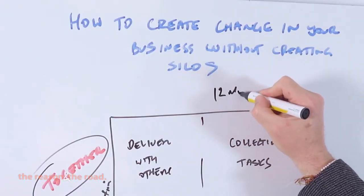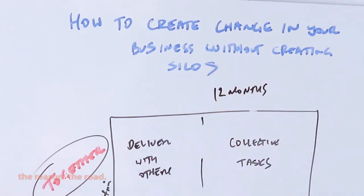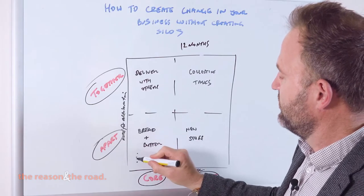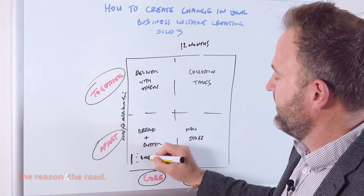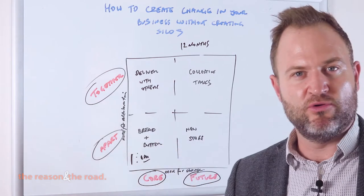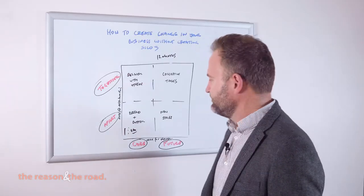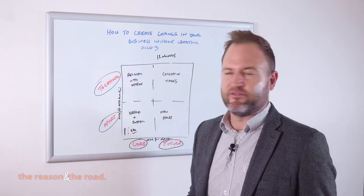So then what I would get you to plan is in the next 12 months, what are the core things that you just need to deliver? The BAU things that you're already doing that you're going to continue. And I would get you to list out those things.